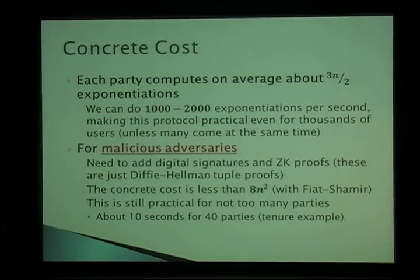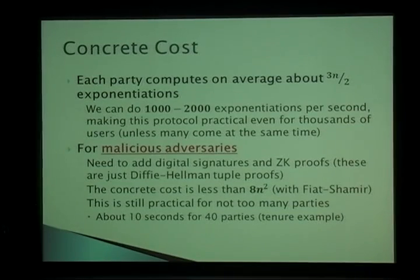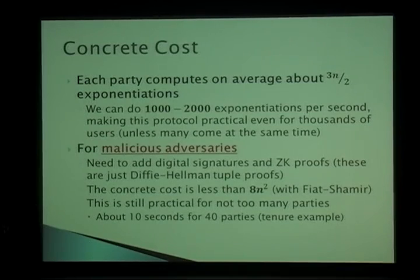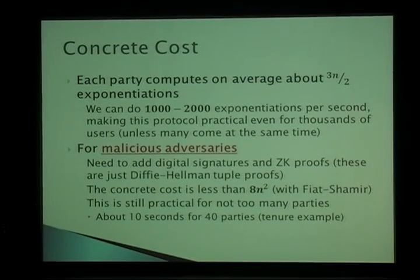The concrete cost is 3N/2 exponentiations for N parties. Since good software can do around 3,000 exponentiations per second, this is practical even for thousands of users. For malicious adversaries, we use the Fiat-Shamir paradigm for efficient zero-knowledge proofs, and our estimate is that for about 40 parties it should take around 10 seconds of computation per party — making it practical for applications like the tenure vote.